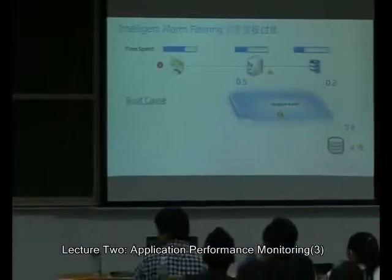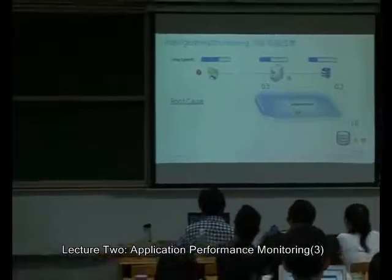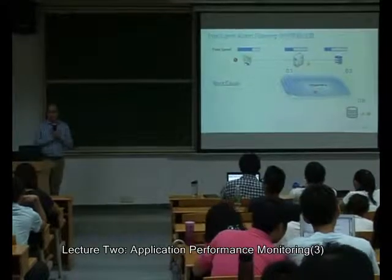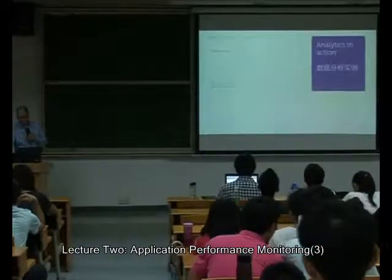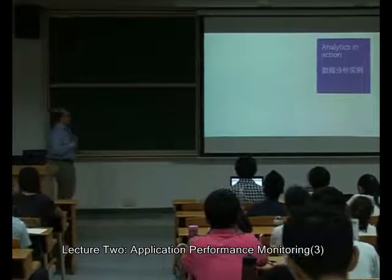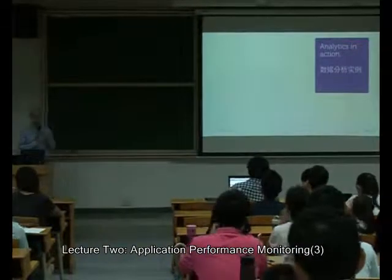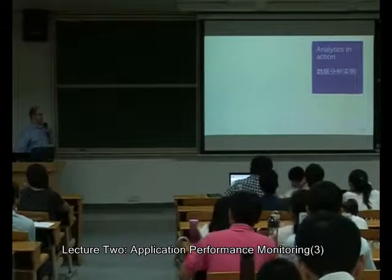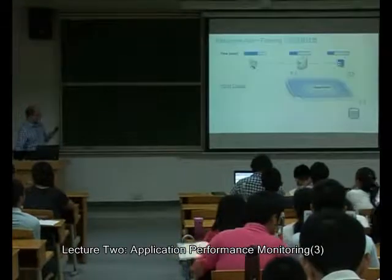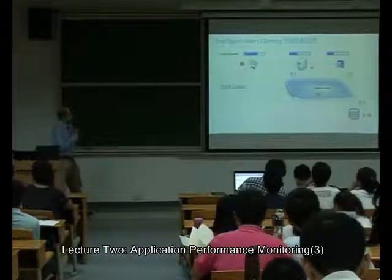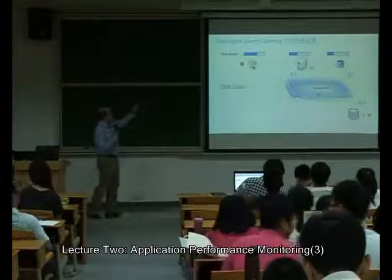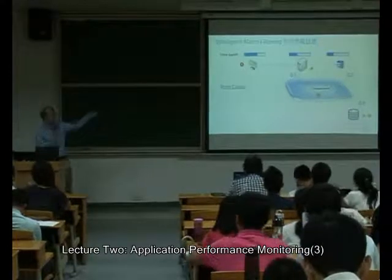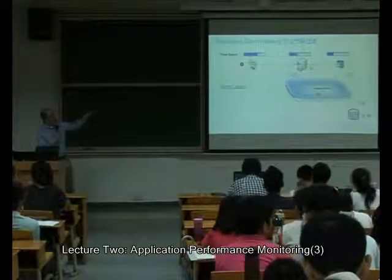We're going to finish up the APM part of this, and then Jeff is going to do the virtual infrastructure talk. Just to start back at this: how do analytics work? This is an example of analytics we would use in APM — actually one we're working on now. We've got three different components in a simplified infrastructure: the client, the browser, the app server, and the database.